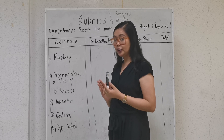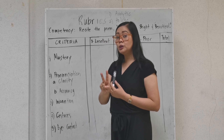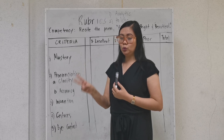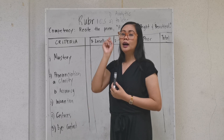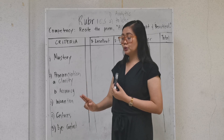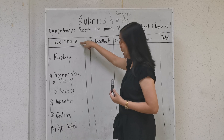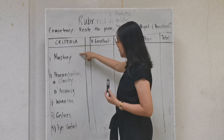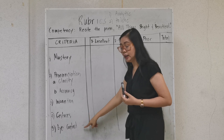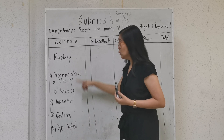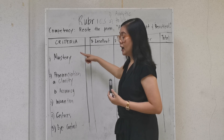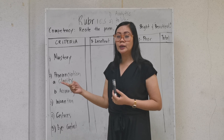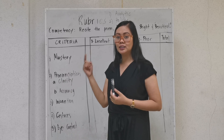Every rubric has two essential parts: the criteria and the level of performance. Both analytic and holistic rubrics have criteria and a level of performance. The criteria are written in the first column. The criteria here are: mastery, pronunciation, intonation, gestures, and eye contact. All of these criteria came from the skills we identified during the time we were designing the task.